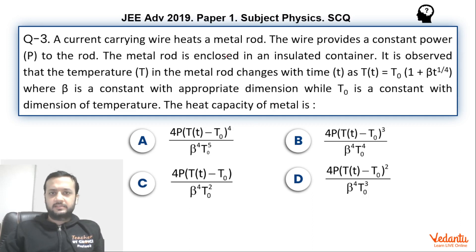It is given that there is a metal rod which is heated by a wire, and the wire provides the constant power P to the rod. The temperature of the rod as a function of time has been given, and we have to find the heat capacity of the rod.